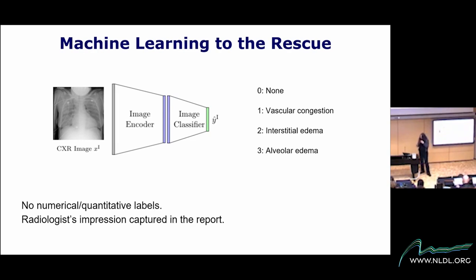On the other hand, this information is available — physicians already looked at the images. The problem is they didn't write down a number; they wrote down a story. Radiologists write narratives about images and know in their mind whether a case is mild, moderate, or severe, but they write descriptions of what they see, not numbers.